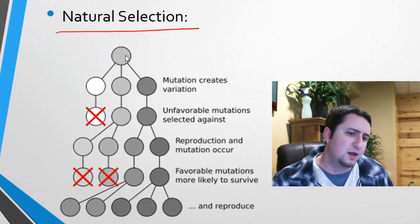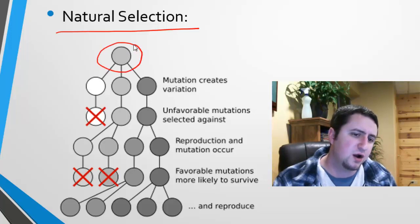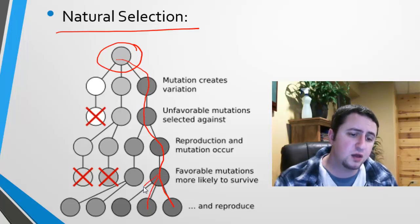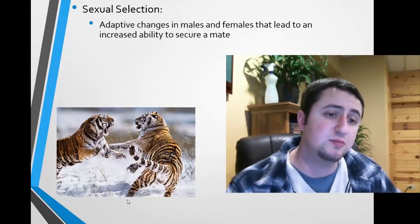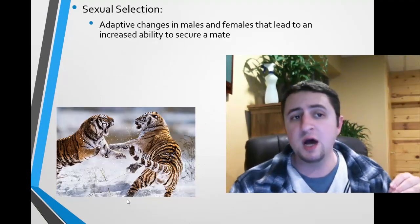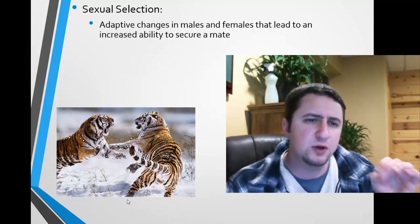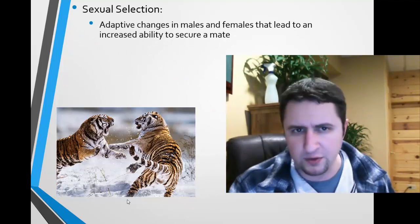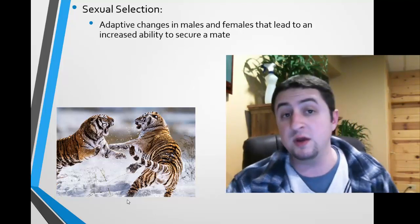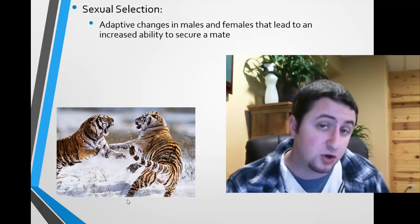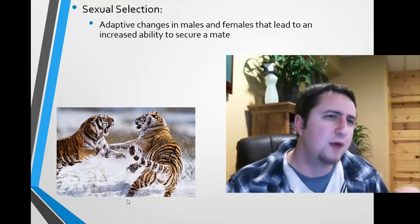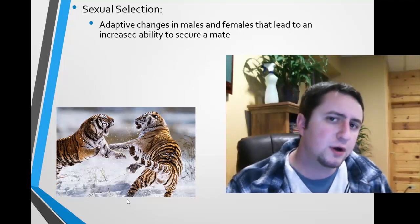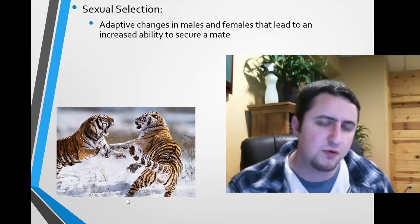So if we take a look over here, let's say that our starting population is organisms that are gray, and there seems to be a selection towards a darker color. If we refer back to sex selection, it is simply defined as where there are changes in males and females that will increase their ability to secure a mate. There are certain behaviors between males and females that allow them to determine who they're going to mate with. And why would it be beneficial for certain organisms to be choosy about who they mate with? We'll focus on that in a little bit.